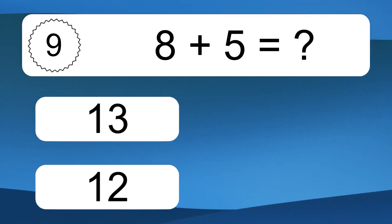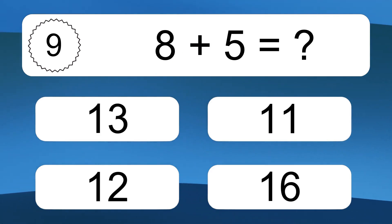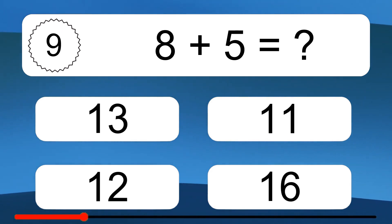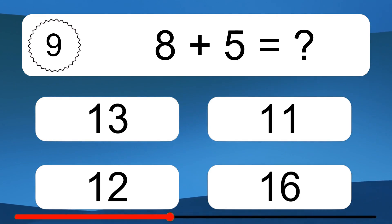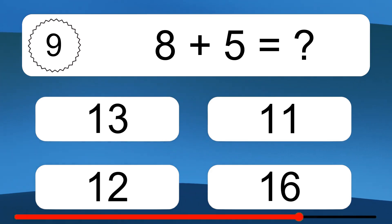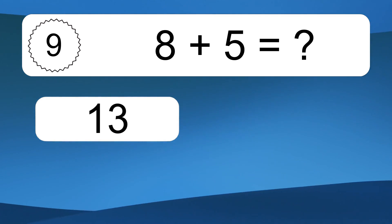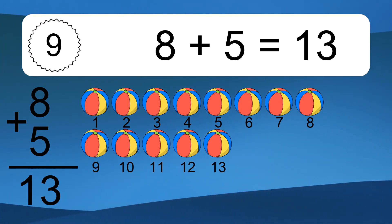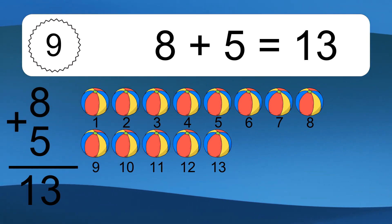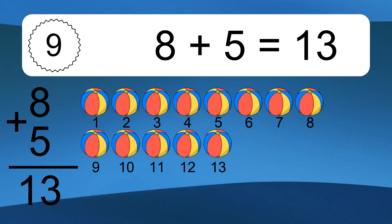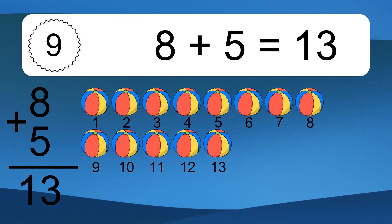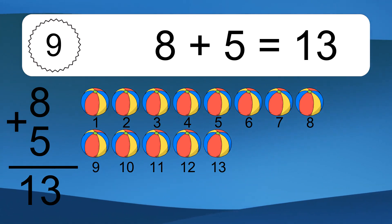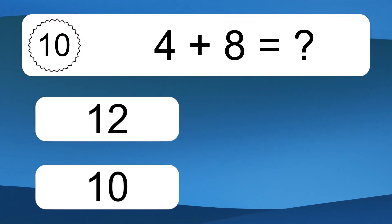8 plus 5 equals what? 8 plus 5 equals 13. Let's count it. 1, 2, 3, 4, 5, 6, 7, 8, 9, 10, 11, 12, 13.